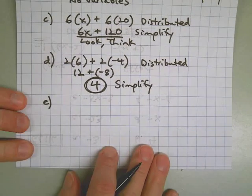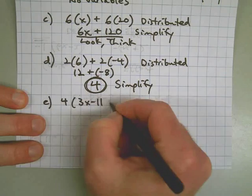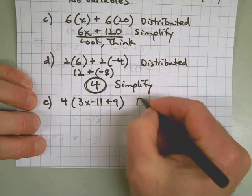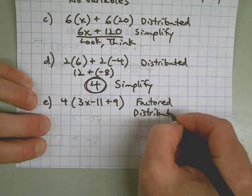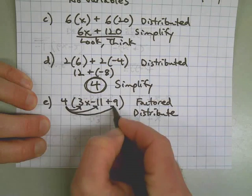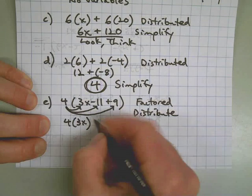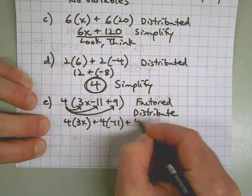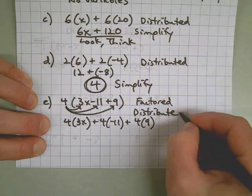Part E. We have a factor and we have three things inside the parentheses. As we learned above, since this is factored form, we need to distribute — pass out that four to each thing inside with multiplication. So I have four times 3x, and I have four times negative eleven, and I have four times nine. We are now in distributed form.